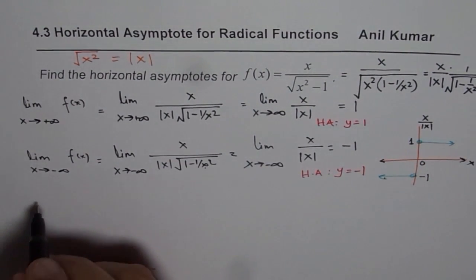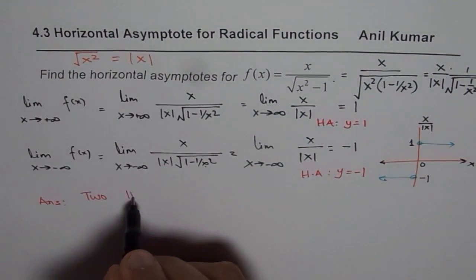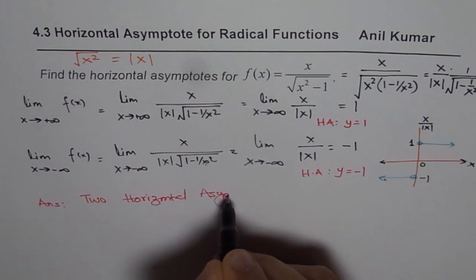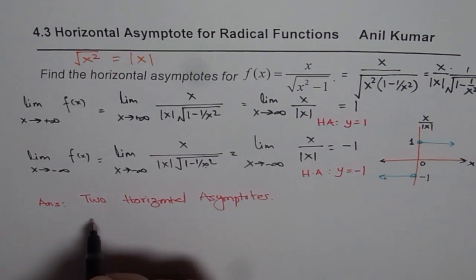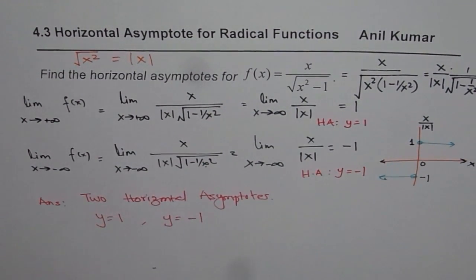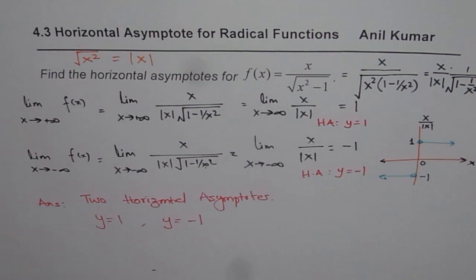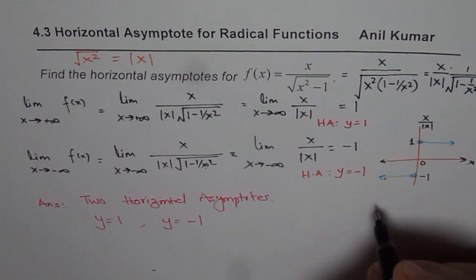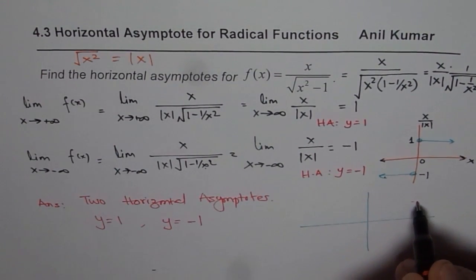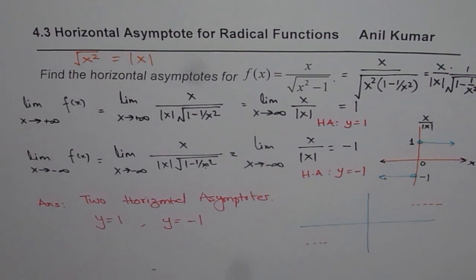Therefore we have our answer: we have two horizontal asymptotes. That is a very important conclusion. One of them is y equals plus 1, and the other one is y equals minus 1. In this expression the denominator is always positive, so we can also find the behavior near the asymptotes. We have one asymptote at y equals 1 and the other at y equals minus 1.